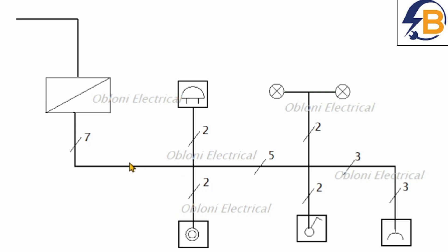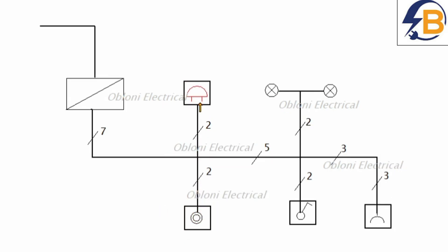Moving to the next branch: it's very simple — we have a feed from the board to the bell switch and then another wire that goes to operate the bell. Here also we have two wires through this branch: one is the feed from the board and then a switch wire that goes to switch the lamps. There are five wires here already — the three wires that pass to the socket, plus one feed wire and one neutral wire.